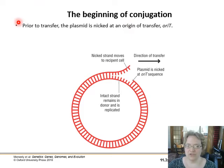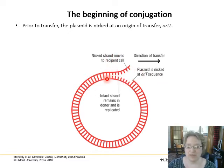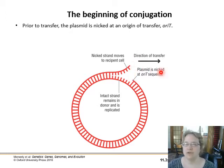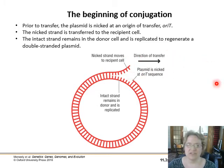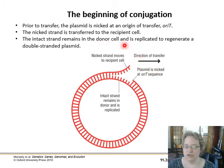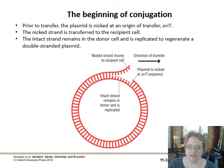When transfer starts, prior to the transfer the plasmid gets nicked. This strand moves into the recipient cell while the intact strand stays in the donor and is replicated — like a circle peeling off another circle. The nicked strand is sent to the other cell while the intact strand stays in the donor and is replicated to restore the double-stranded plasmid. The nicked strand will eventually be reattached and replicated once it's in the recipient cell.